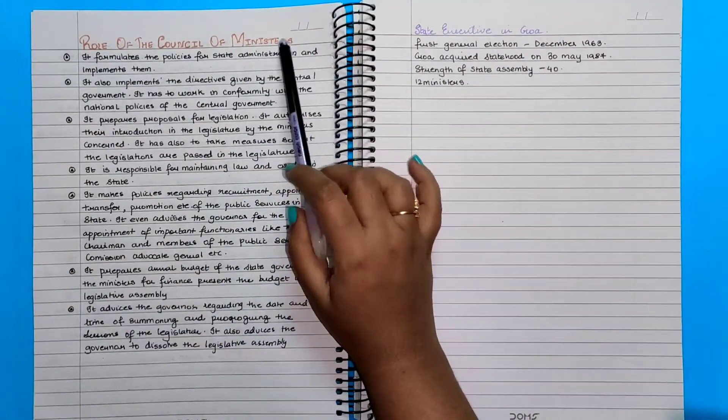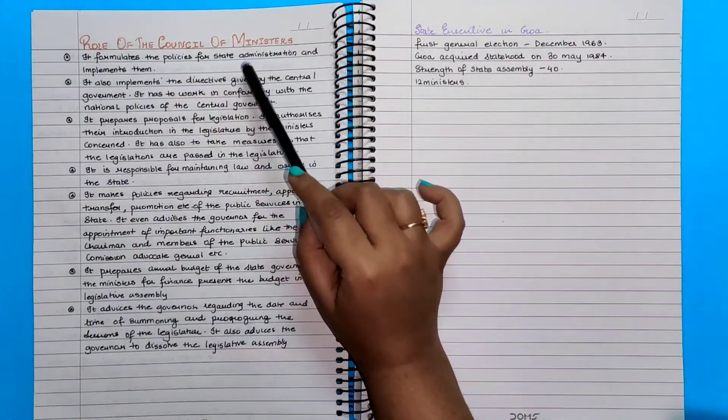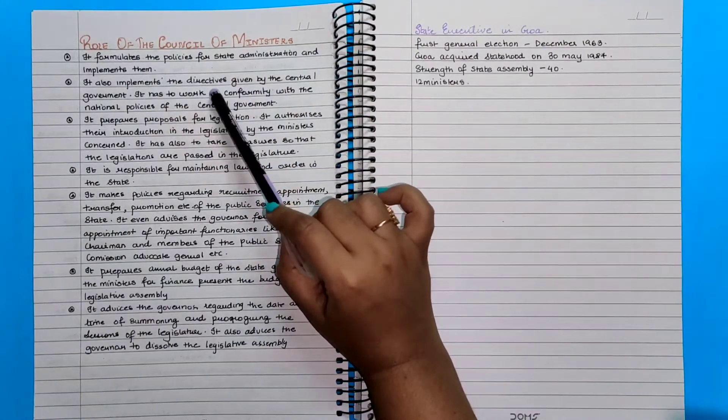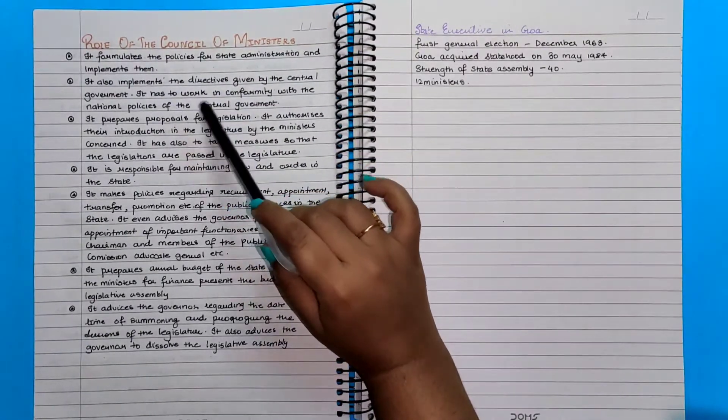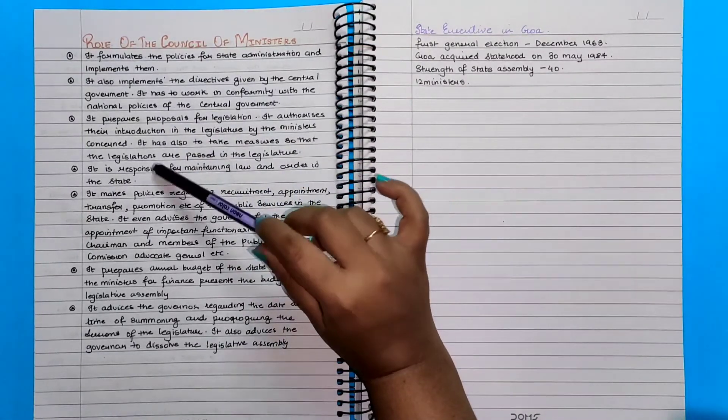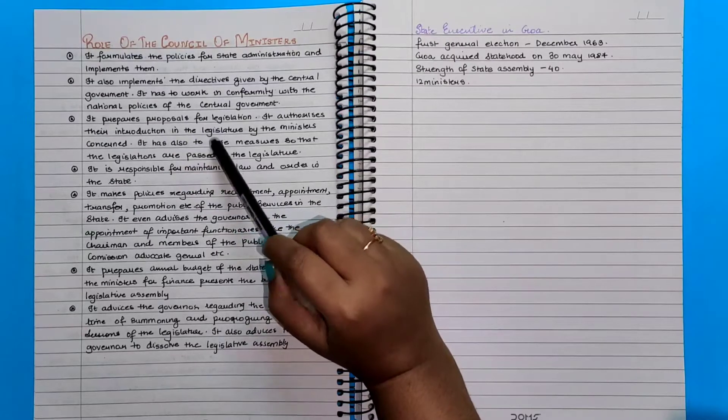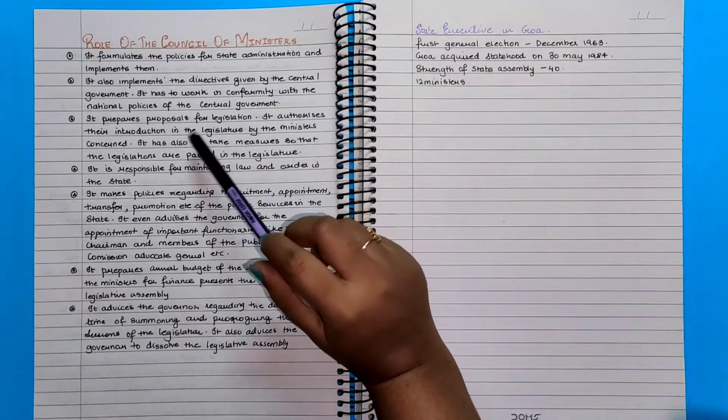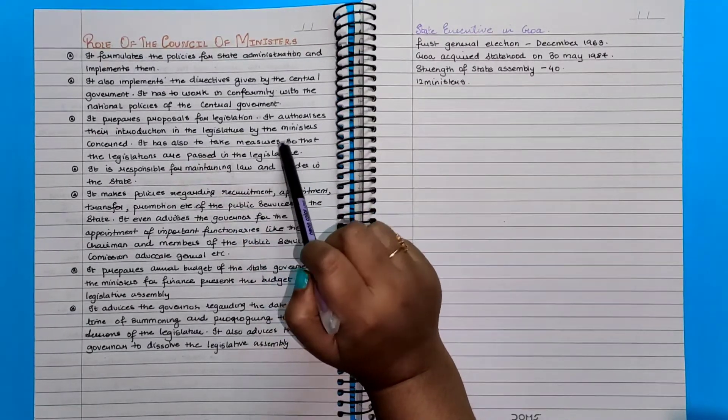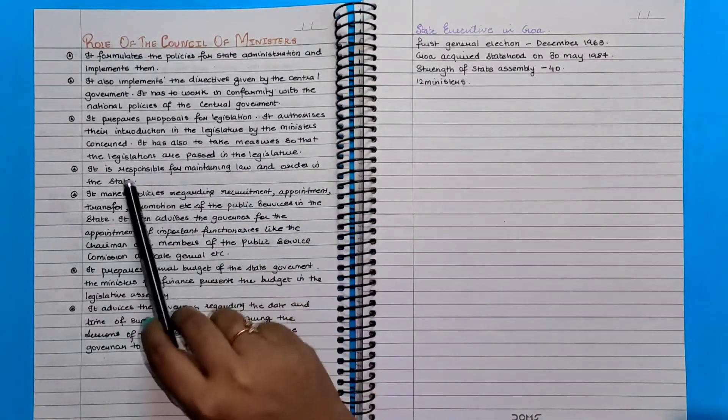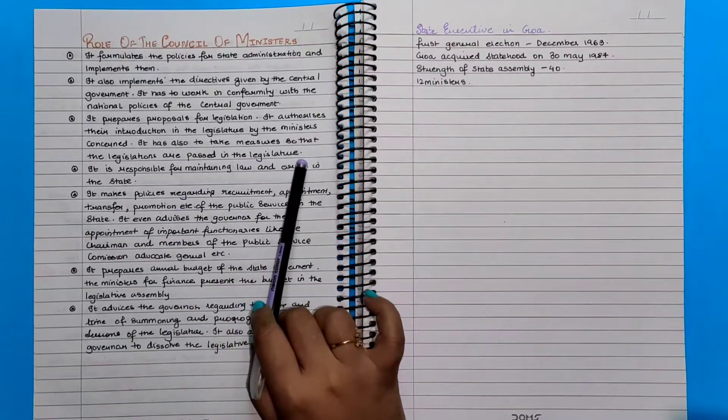Role of council of ministers: It formulates the policies for state administration and implements them. It also implements the directives given by the central government. It has to work in conformity with the national policies of the central government. It prepares proposals for legislation. It authorizes their introduction in the legislature by the ministers concerned. It has also to take measures so that the legislations are passed in the legislature.